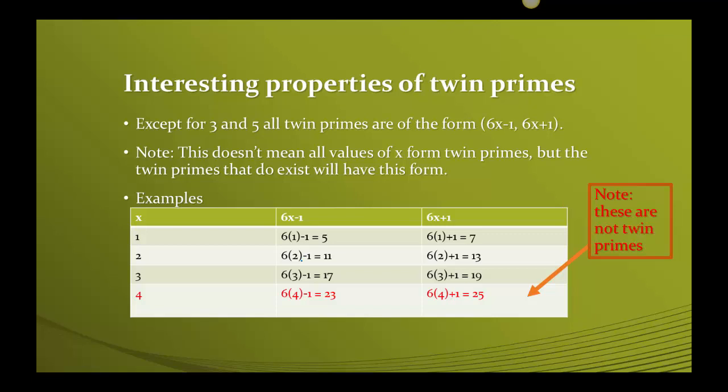If you do 2, same thing. 6 times 2 minus 1, 12 minus 1 is 11, and then 6 times 2, which is 12, plus 1 is 13. And wow, look at that again. We have twin primes, 11 and 13. Same thing at 3. 6 times 3 is 18, so I subtract 1, I get 17. I add 1, I get 19. Once again, twin primes.